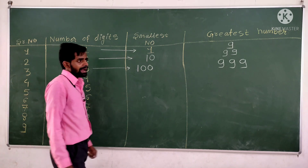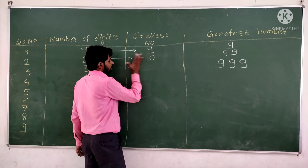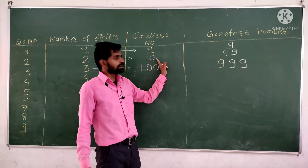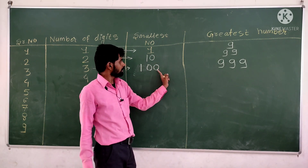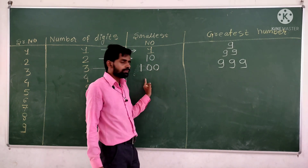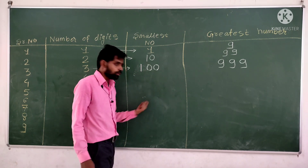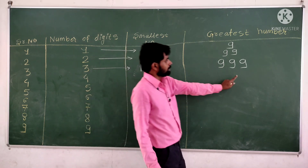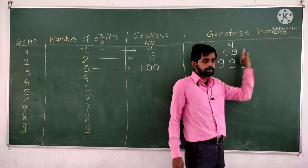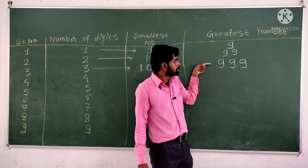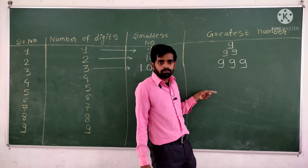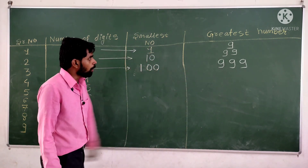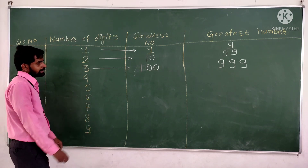You can see a pattern here. For the smallest numbers, it is 1, then 1 with one zero, then 1 with two zeros, then 1 with three zeros, four zeros, five zeros, and so on. For the greatest numbers, it is one nine, then two nines, then three nines, four nines, five nines, six nines, and so on.